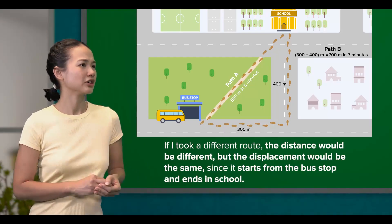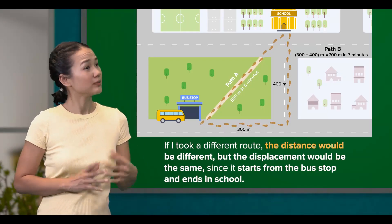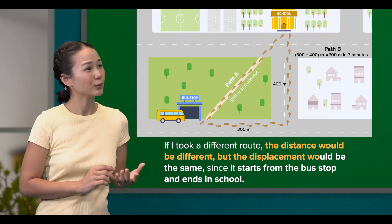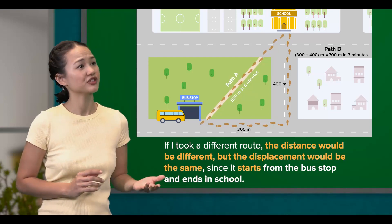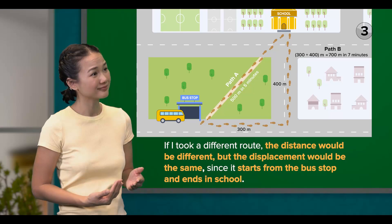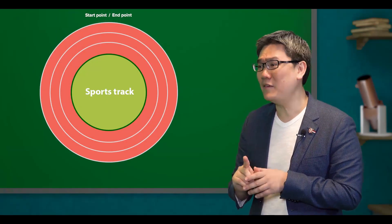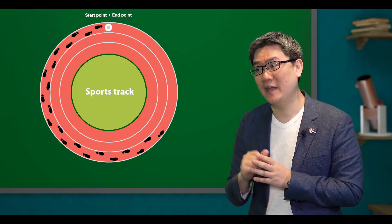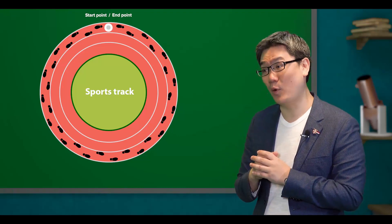So if I took a different route, the distance would be different, but the displacement would be the same since it starts from the bus stop and ends in school. Yes, very good. Now, let me ask you a question. If I run one lap around a sports track and back to the starting point, is my displacement zero?